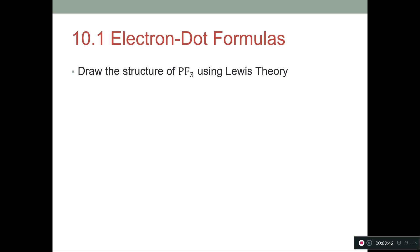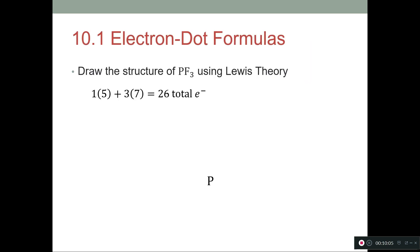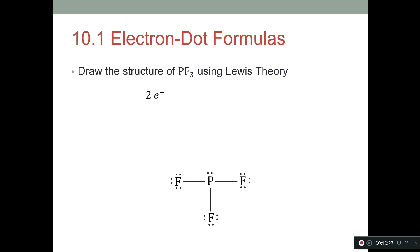Next, we draw the structure of phosphorus trifluoride using Lewis theory. Count the electrons: phosphorus has five valence electrons, fluorines have seven each and there are three of them, giving 26 total electrons. Phosphorus is closer to the carbon column than fluorine, so phosphorus is the central atom. Place the fluorines around it, put bonds between them, subtract the bond electrons — leaving 20 electrons. Put those around the terminal fluorines, which uses 18, leaving two electrons. Those two go as a lone pair on the central phosphorus atom, giving zero remaining. This is the structure for phosphorus trifluoride.